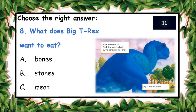Question number 8: what does Big T-Rex want to eat? A: Bones, B: Stones, C: Meat. You have ten seconds to answer. C: Meat. Yes, meat — he wants to eat meat!